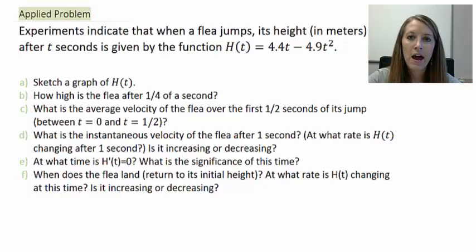All right, we can see that I have lots of parts of this word problem. Let's just start with reading the problem itself. Experiments indicate that when a flea jumps, its height in meters after t seconds is given by this function: h(t) equals 4.4t minus 4.9t squared. Now, we want to do lots of things with this.